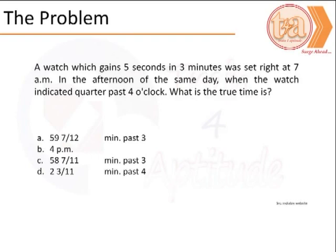In today's problem, we are given a watch which gains 5 seconds in 3 minutes. It was set right at 7 am in the morning. Later in the afternoon the same day, the clock is indicating 4 hours 15 minutes. We are required to find the true time from the given set of options.